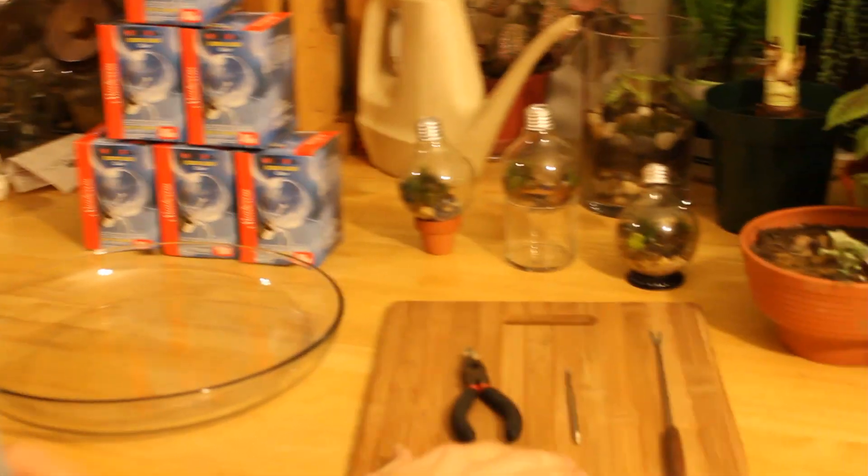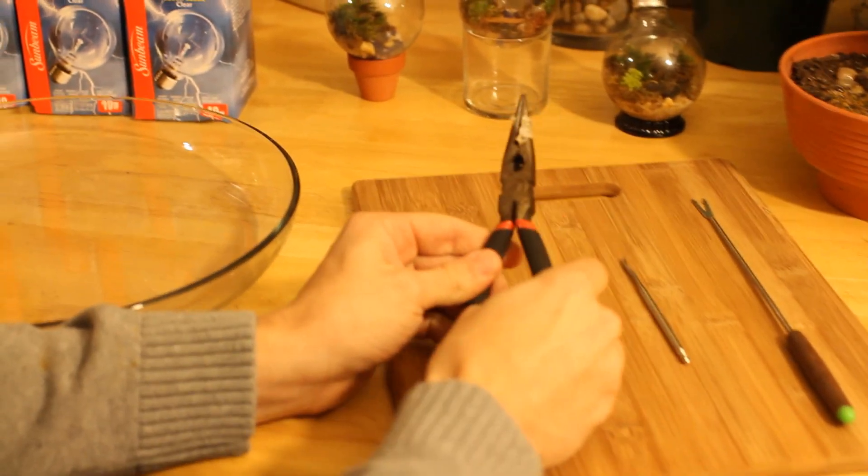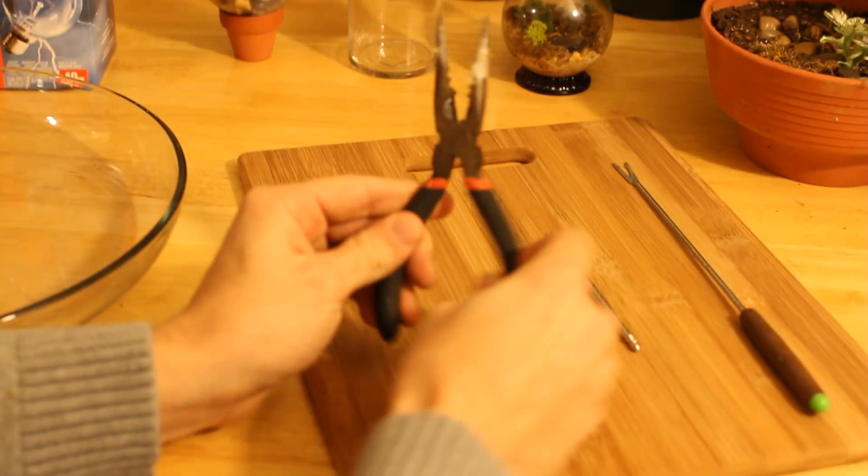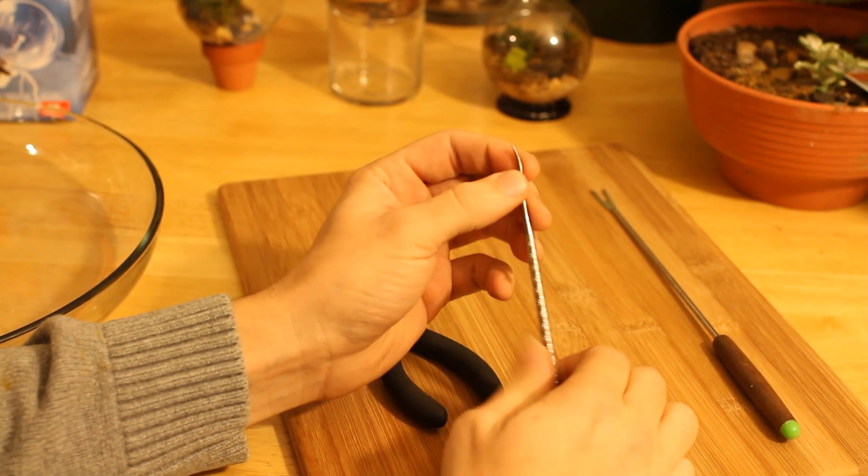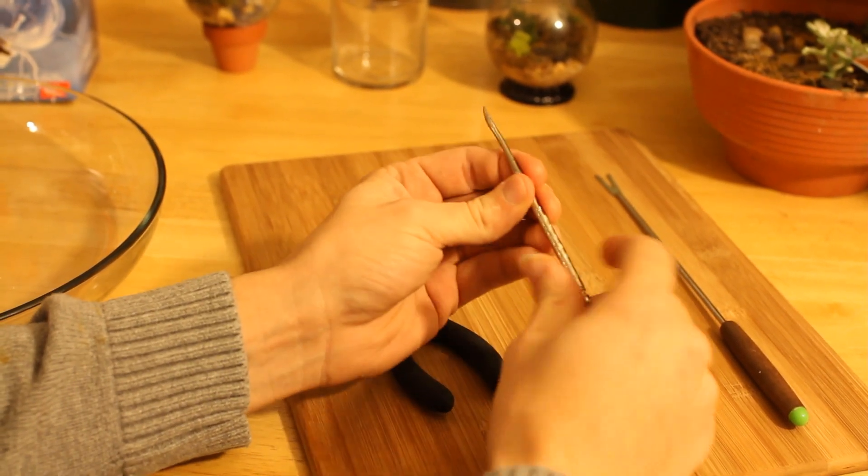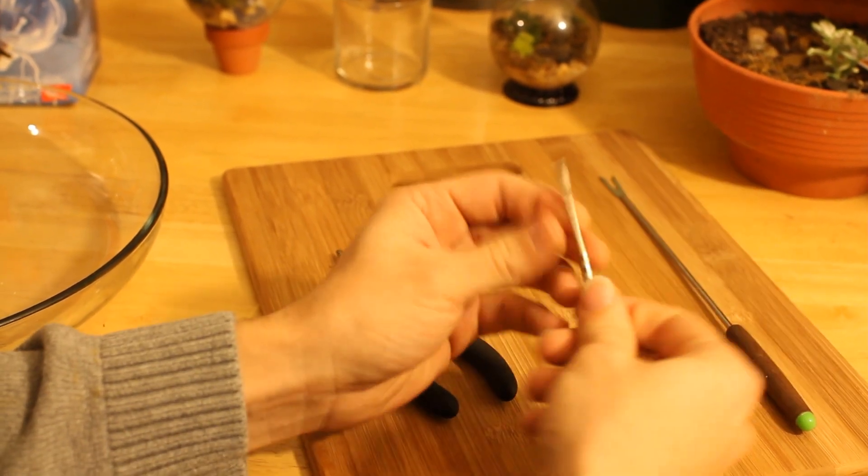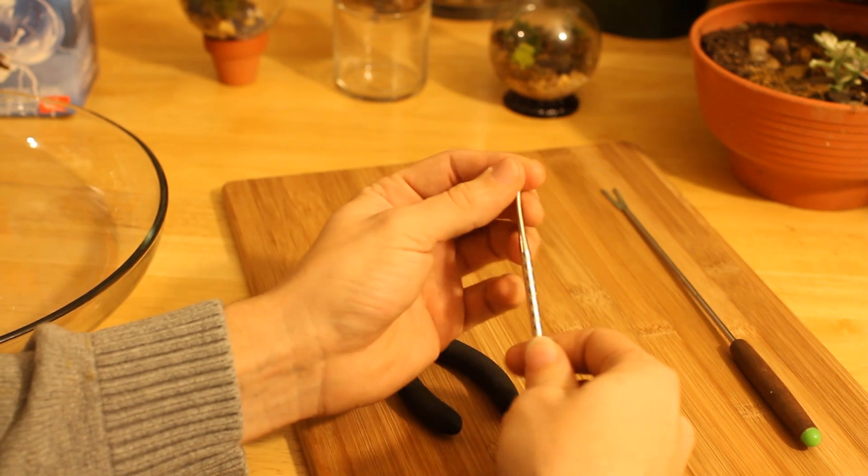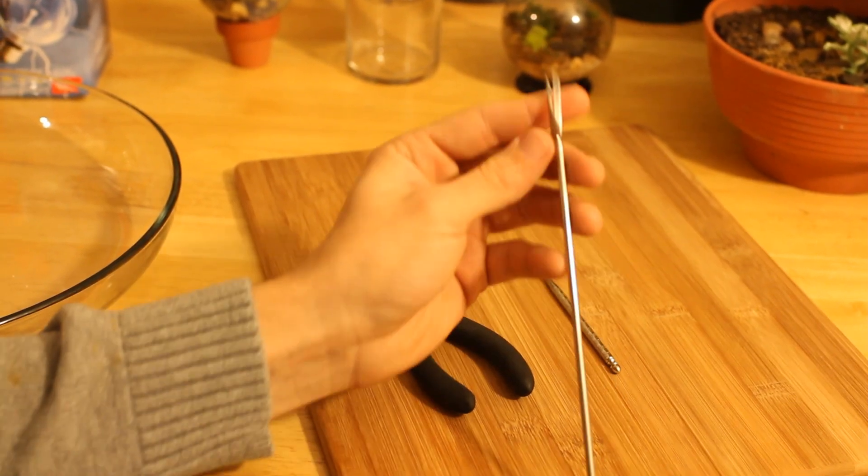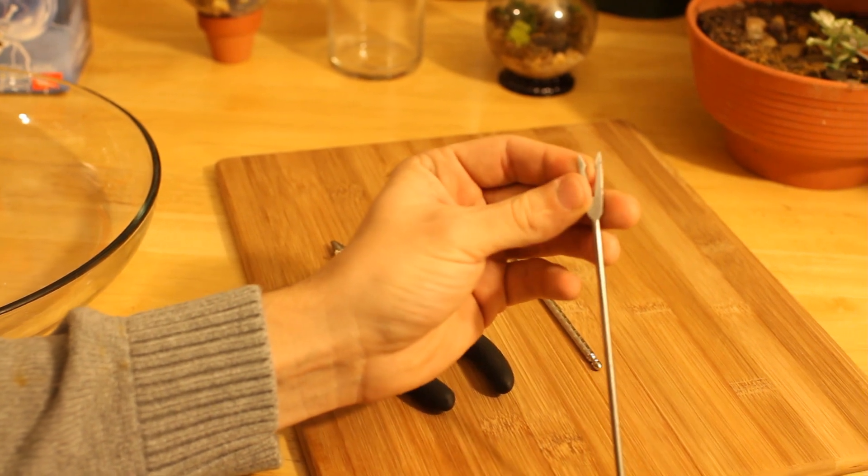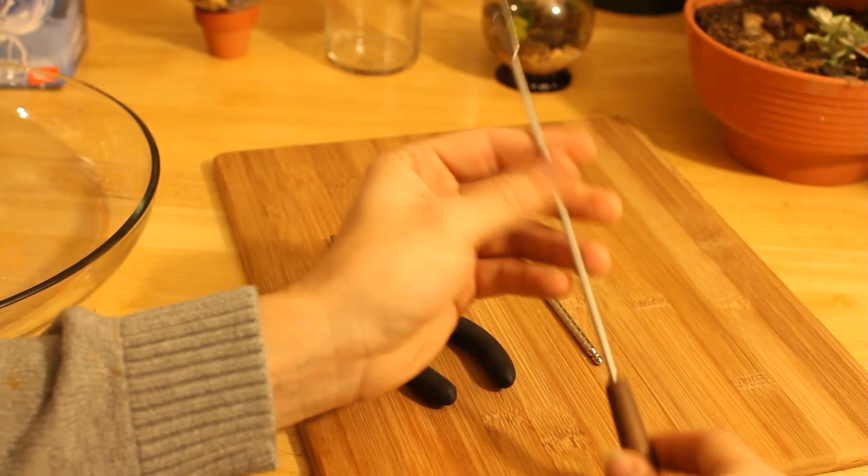Over here on the cutting board we have needle nose pliers which are essential for this task. You'll also need one of these things. I'm not exactly sure what it is but I found it at a thrift store. It's a piece of metal. You could probably do some dental work with this. You can substitute your own metal thing. Then I have a skewer here which I like to use as well. It's just fun to look at.